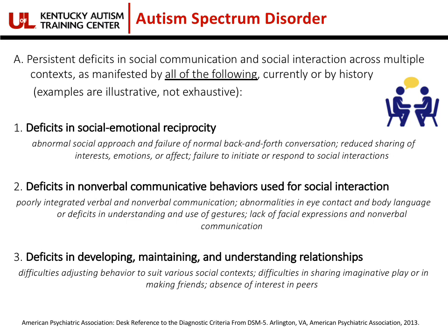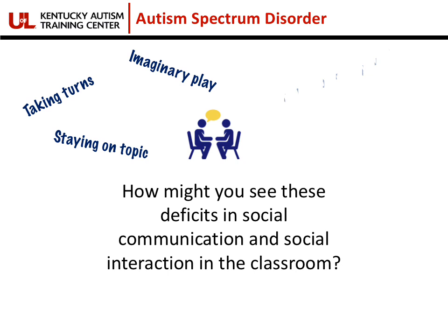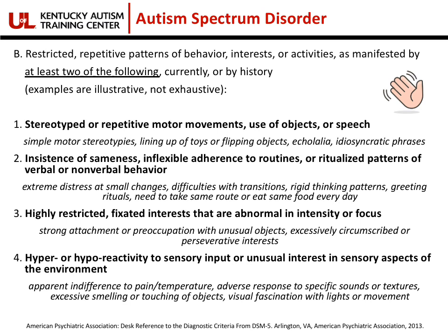Students with autism will have a very difficult time adjusting their behaviors and sharing in imaginative play. When it comes to social communication and social interaction, you may see difficulties with taking turns or staying on topic, engaging in imaginary play or hypothetical scenarios, participating in partner or group work, and possibly interrupting peers or other adults.